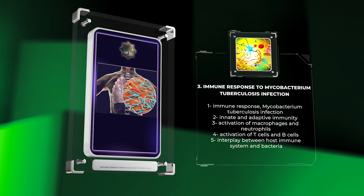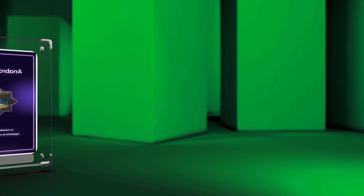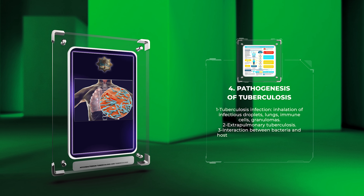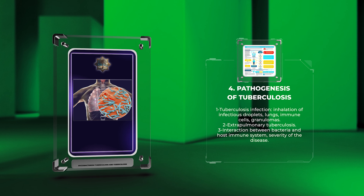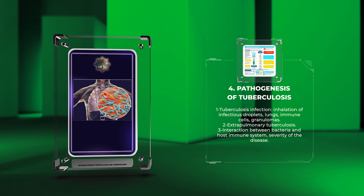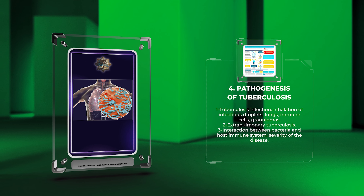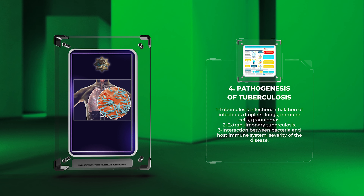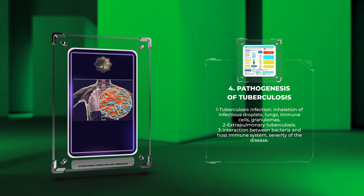The process of tuberculosis infection begins with the inhalation of infectious droplets. The bacteria reach the lungs, where they are phagocytosed by immune cells. Instead of being eliminated, the bacteria survive and replicate within these cells, leading to the formation of granulomas. The bacteria can also spread to other parts of the body, causing extrapulmonary tuberculosis. The interaction between the bacteria and the host immune system determines the severity of the disease.